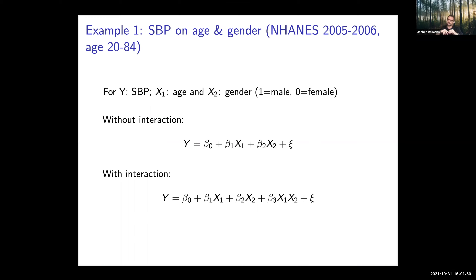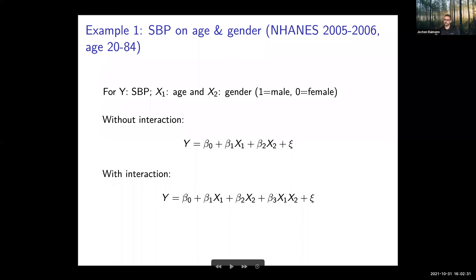Using the ENHANCE dataset — ENHANCE 2006 with participants aged 20 to 84 — Y is systolic blood pressure, x_1 is age, x_2 is gender in binary format (one or zero). Without the interaction, the outcome is the intercept plus beta_1*x_1 plus beta_2*x_2 plus the error term. With the interaction, we add the interaction coefficient x_1*x_2 plus the error term.